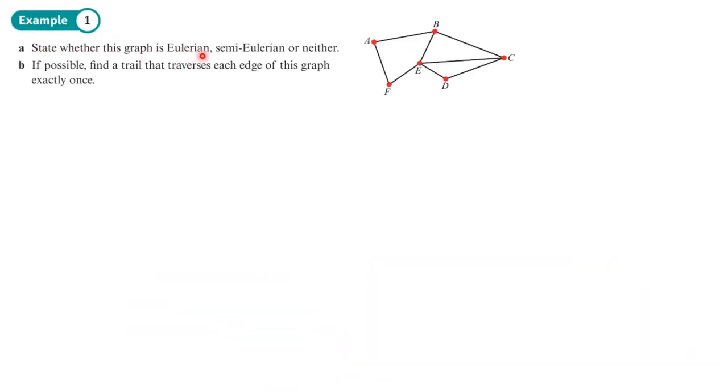Right, so here it's asking us to state whether this graph is Eulerian, semi-Eulerian, or neither. Now the way we're going to work that out is by writing down the order of each one of these vertices here. So A is 2, B is 3, C is 3, D is 2, E is 4, and F is not 5, F is 2.